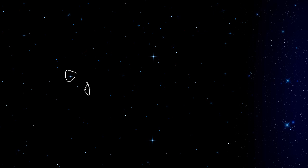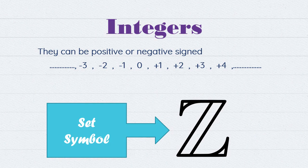We use whole numbers in counting, such as counting the stars — we say 1, 2, 3. Our second set of numbers are the set of integers. They can be positive or negative.